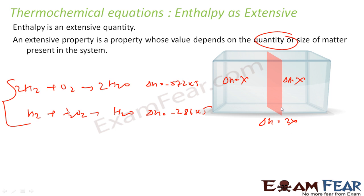If this reaction with 2 hydrogen has an enthalpy change of 572 kilojoules, for 1 hydrogen it's 286 kilojoules—just half. This means enthalpy depends on the quantity of matter present in the system, and that's why enthalpy is an extensive quantity.